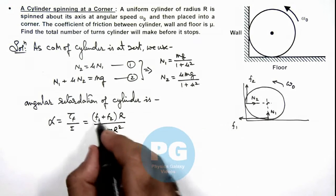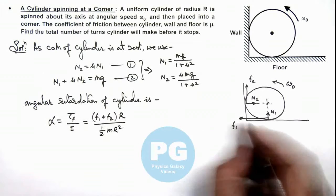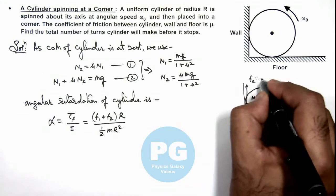Now here the values of f1 and f2 we can write as mu n1 and mu n2. This will be mu n1 and this will be mu n2.